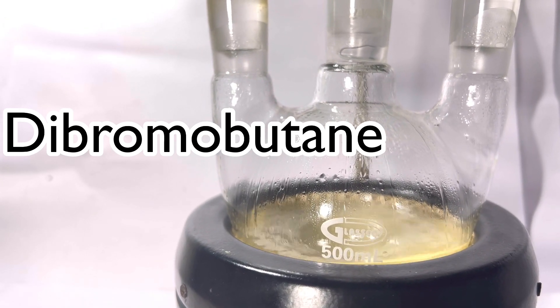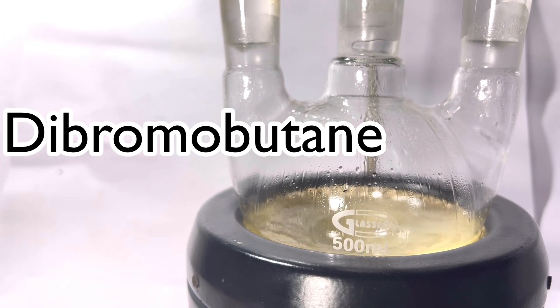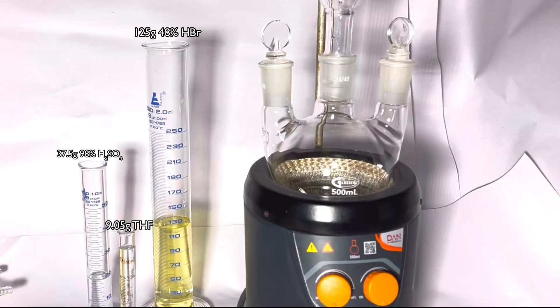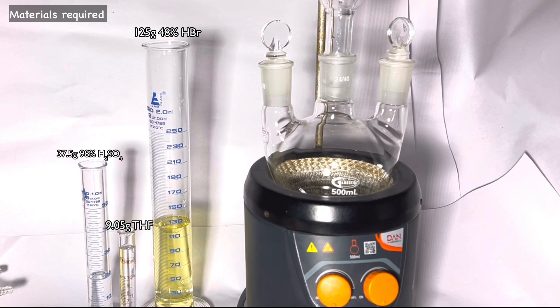The synthesis was adapted from Vogel's textbook of practical organic chemistry. For this synthesis you will need 125 grams of 48% azeotropic hydrobromic acid, 37.5 grams of concentrated 98% sulfuric acid, and 9.05 grams of tetrahydrofuran. I have taken half the stoichiometric amounts mentioned in Vogel's.